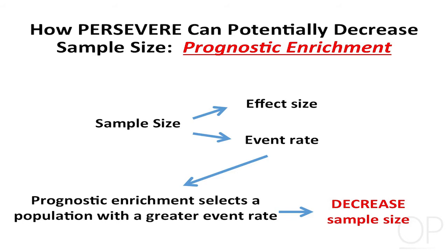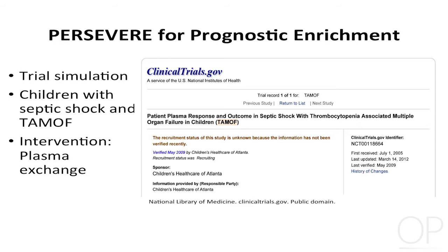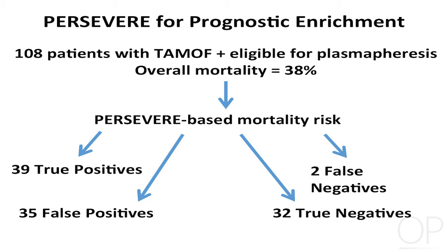We haven't been able to do this prospectively yet, so we've done a trial simulation focusing on kids with septic shock and TAMOF — thrombocytopenia-associated multiple organ failure. The purported intervention for TAMOF is plasma exchange. We used data from a quasi-trial listed on clinicaltrials.gov, finding 108 patients in our database who met those criteria. That group had a mortality rate of 38%. We assigned each patient a PERSEVERE mortality risk, finding 39 true positives and 35 false positives.